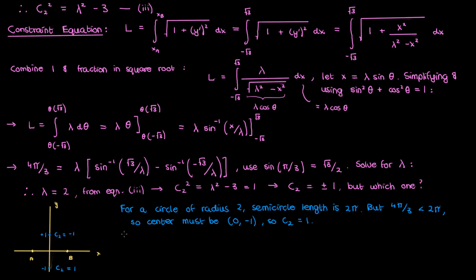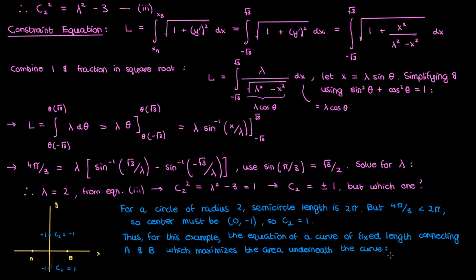So in the end the equation of the curve of fixed length connecting the points a and b which maximizes the area underneath the curve is a segment on a circle given by the following equation, at least for this particular example. This is the solution to the isoparametric problem, the calculus of variations problem involving a curve of fixed perimeter or a fixed length.